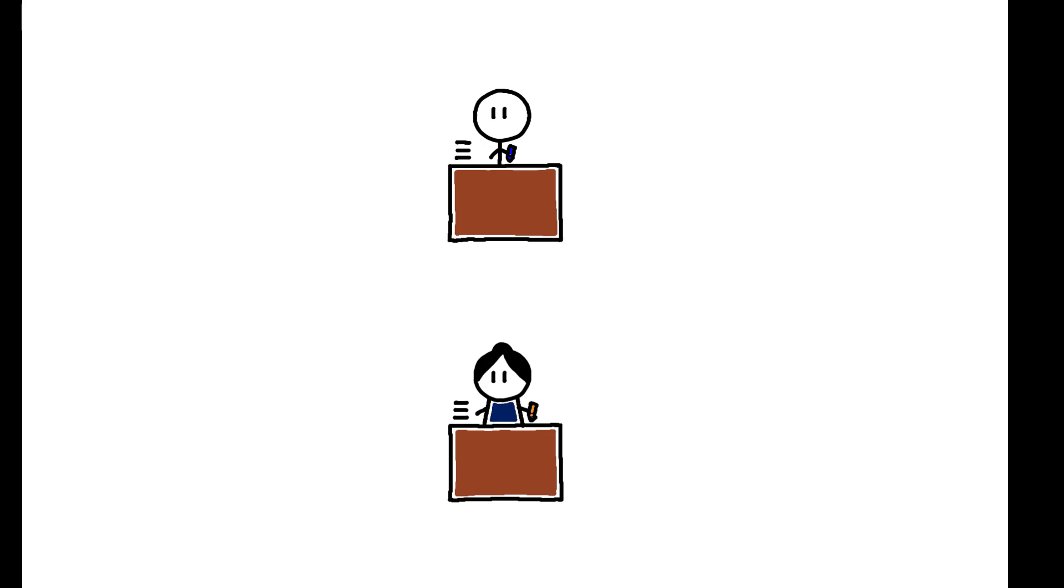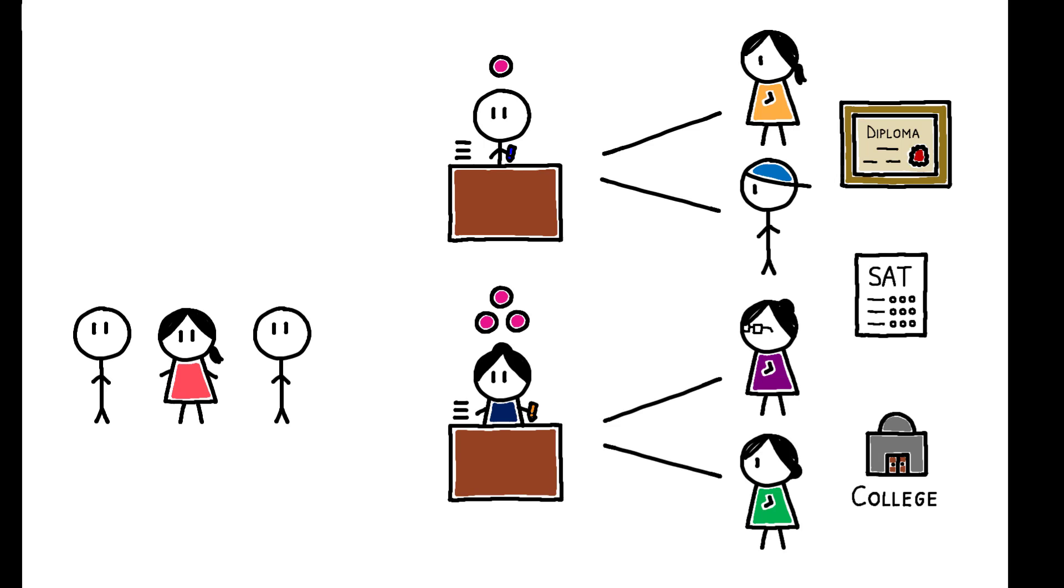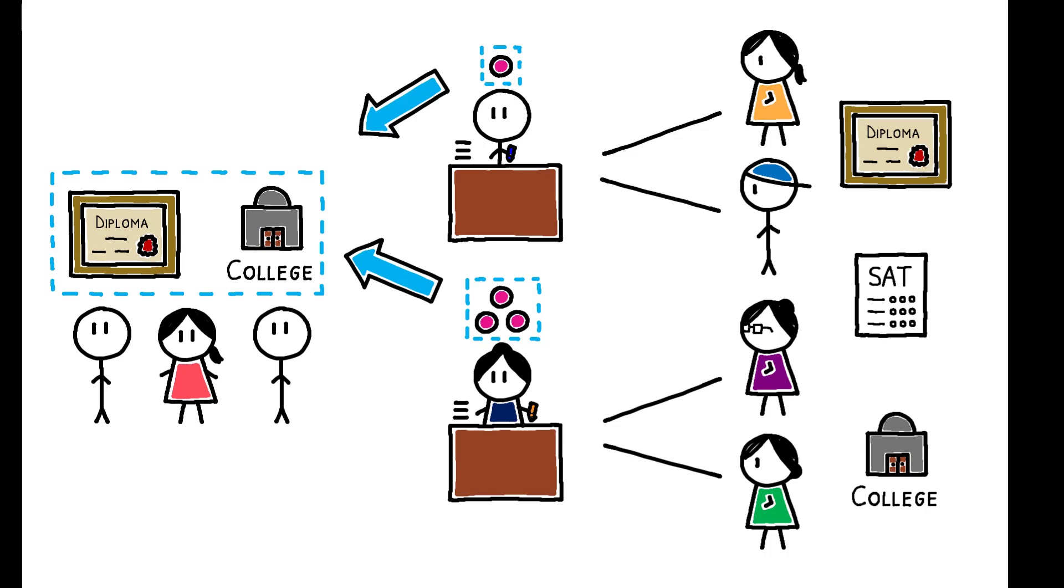In a given school and for a given cohort, counselor value added is derived from student outcomes in other cohorts, then causal effects are estimated from the relationship between counselor value added and student outcomes in this cohort.